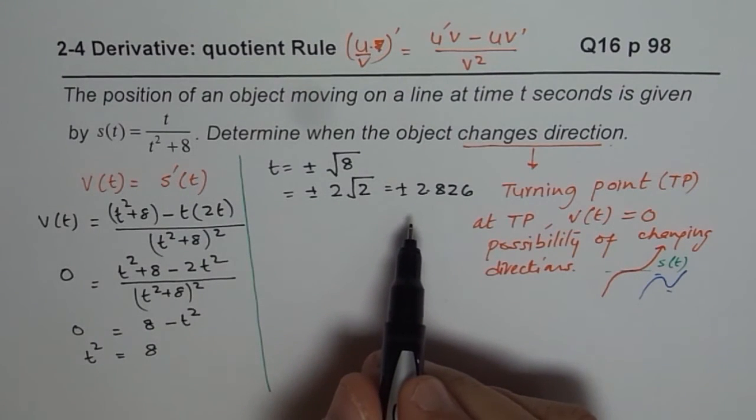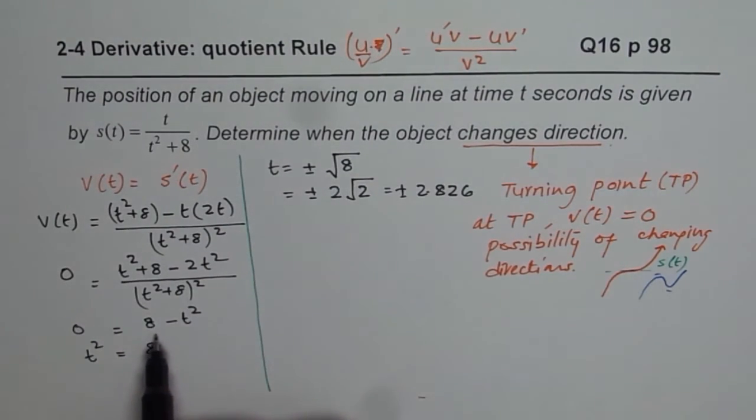Now, what we can check here is, that this particular equation, t squared minus 8, if you kind of sketch this, there are a couple of ways to do it.